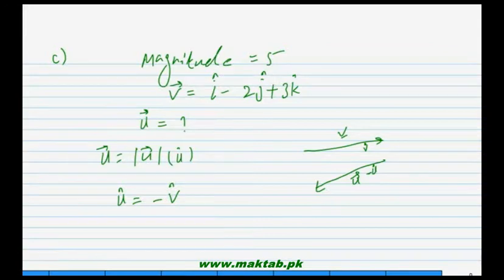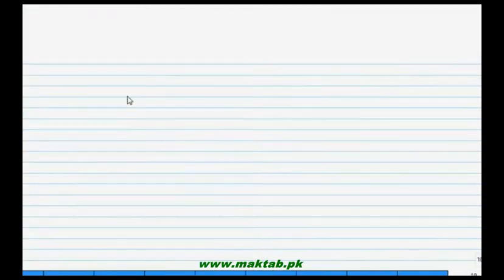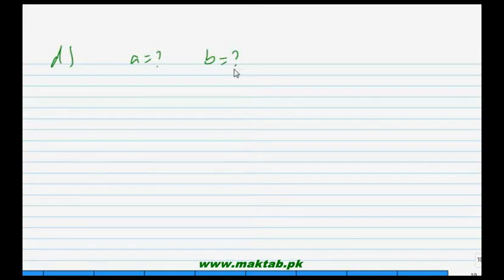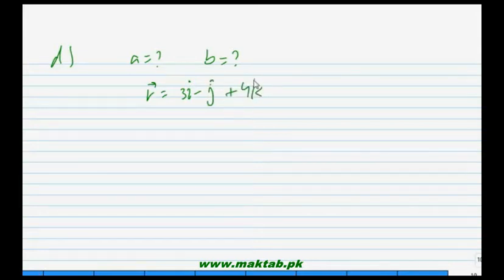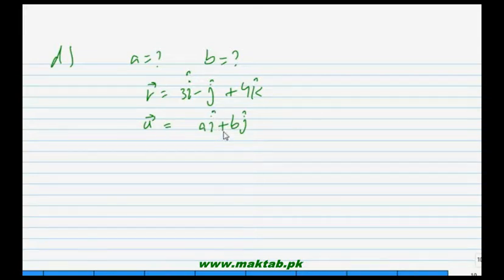The procedure for part C has been explained — students should complete it on their own. Now for part D: find the values of a and b, given two parallel vectors v equals 3i minus j plus 4k and u equals ai plus bj minus 2k.